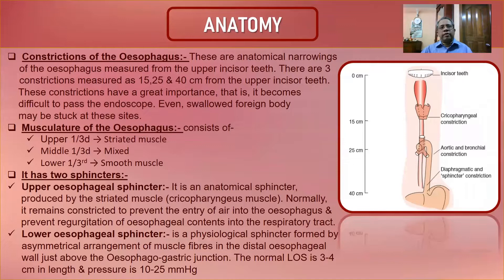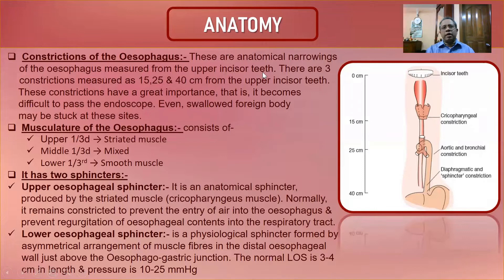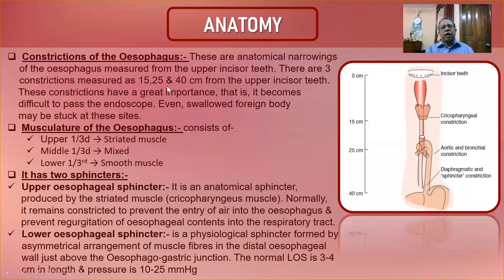There are anatomical narrowings of the esophagus. These are measured from the upper incisor teeth — not the lower incisors, because the lower incisors are mobile while the upper incisors are fixed. The three constrictions are at 15, 25, and 40 centimeters from the upper incisor teeth. The esophagus itself is 25 cm in length, but the endoscopic measurements start from the upper incisor teeth.